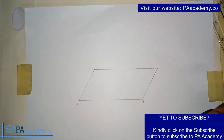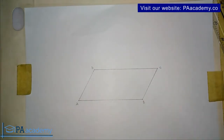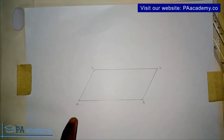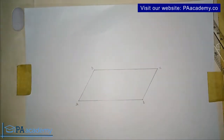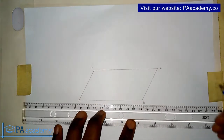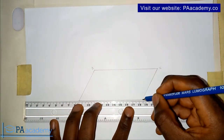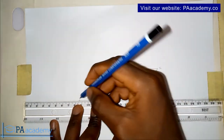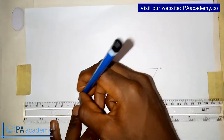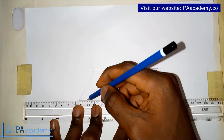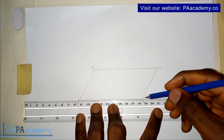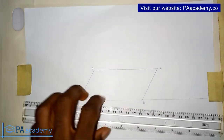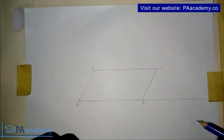Once you have your given parallelogram, the first thing you have to do is extend line AB. So line AB — I'm going to extend it to the right.